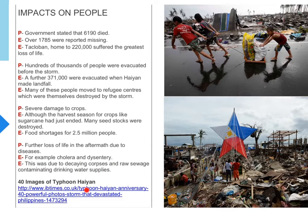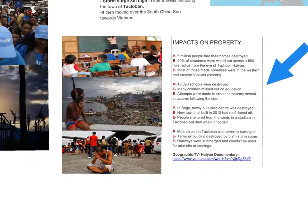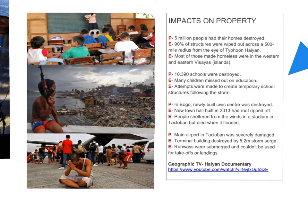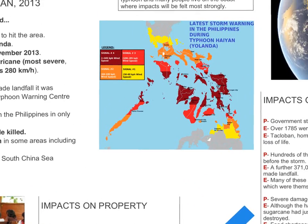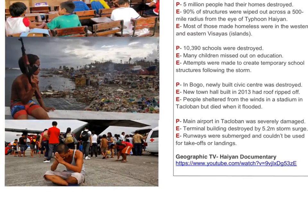If you click the link in your e-book, it will take you through 40 images of Typhoon Haiyan, from the initial storm surge right through to the impacts on people and property. Moving to impacts on property: 5 million people had their homes destroyed, with 90% of structures wiped out across a 500-mile radius from the eye of Typhoon Haiyan. This ties into the initial picture showing the greatest damage in the central, eastern and western areas, which is where the path of the eye travelled.